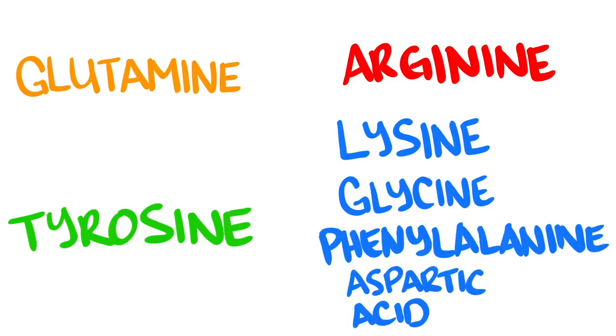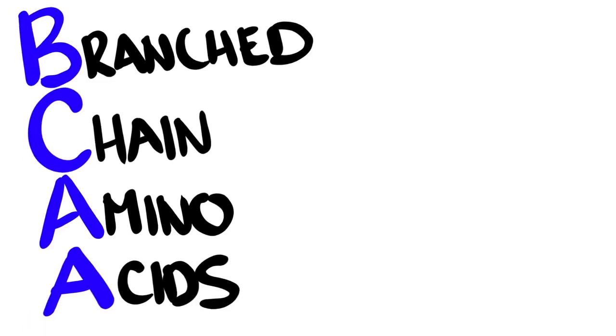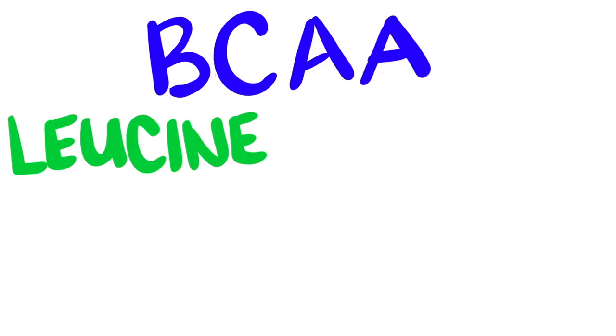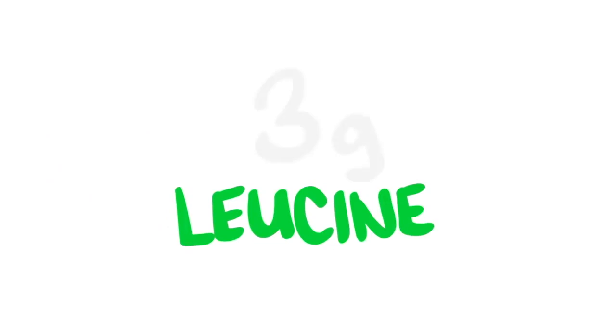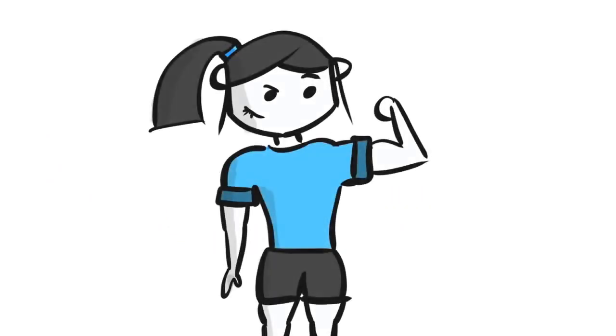But in terms of building muscle, whey also contains the ever crucial branch chain amino acids. As we know now, the presence of BCAAs, especially leucine, in our body paired with resistance training immensely improves muscle protein synthesis. And with about 3 grams of leucine per serving, whey protein most definitely can improve your gains at the gym.